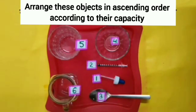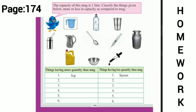We have learnt smaller objects have less capacity and bigger objects have more capacity. In your homework, dear children, you will do the activity given on page number 174 of your maths book. In this activity, you will take 1 mug of water. You have to compare the capacity of these different objects with the capacity of the mug, then classify them as more capacity or less capacity compared to the capacity of mug.